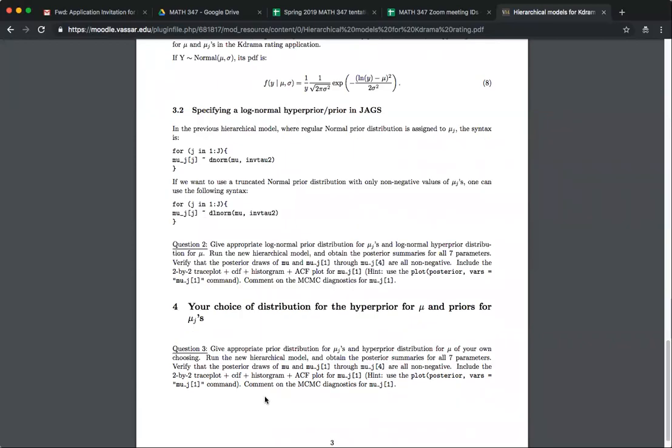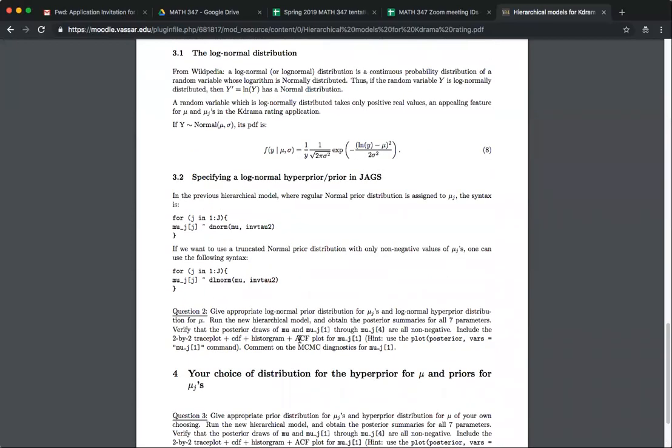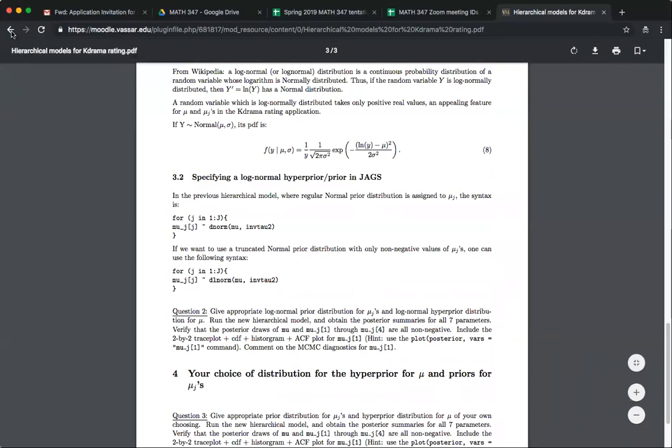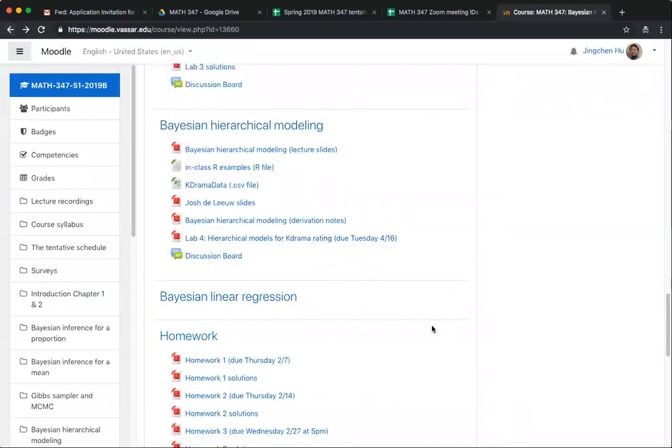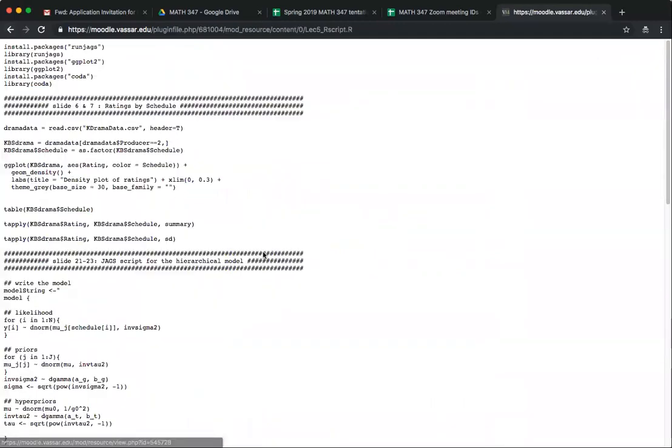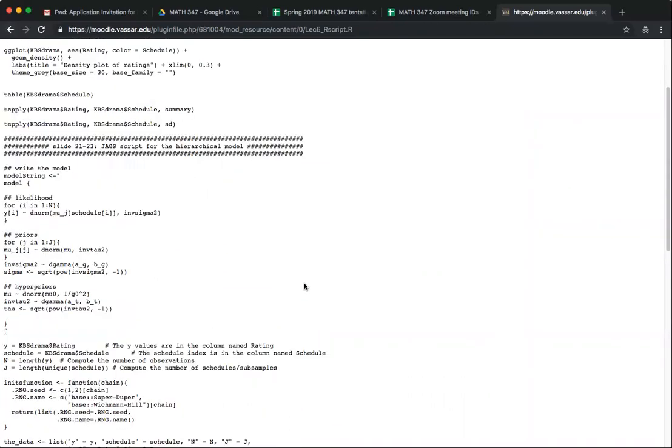And the last one is open ended. You can think about any other distribution that you want to use and then search online how to get the JAGS script to get that to work. And I should mention that the instruction tells you only part of the code that you should change when you try to use a new prior or hyper prior. But if you actually need to know how to run the JAGS, you go back to Moodle.